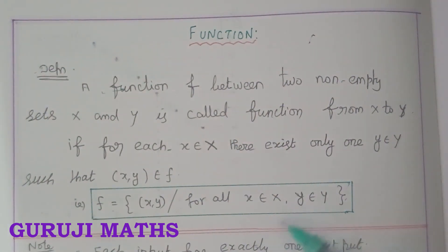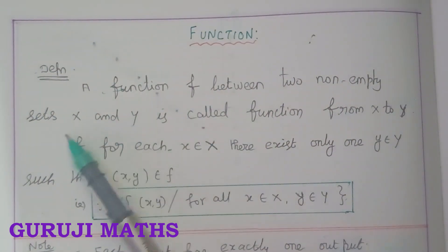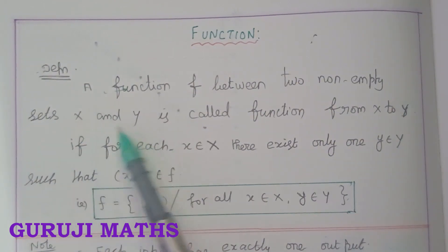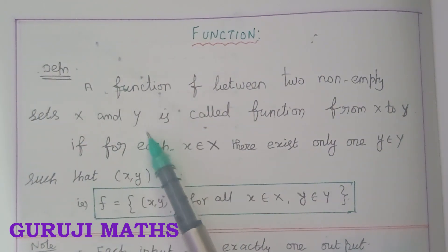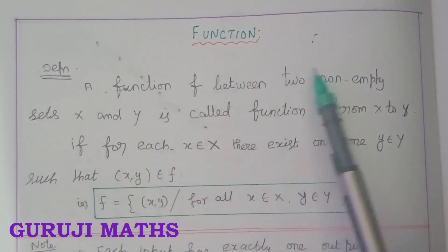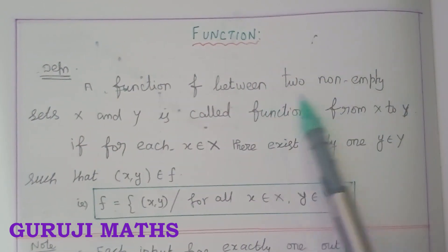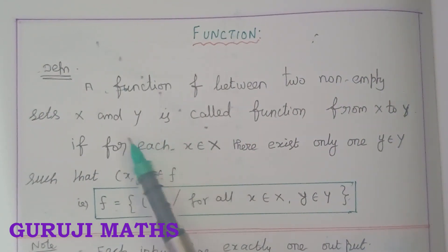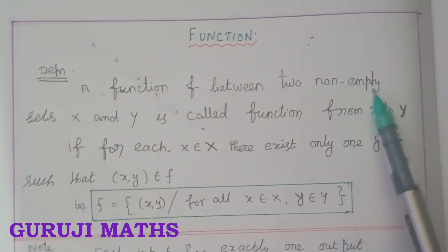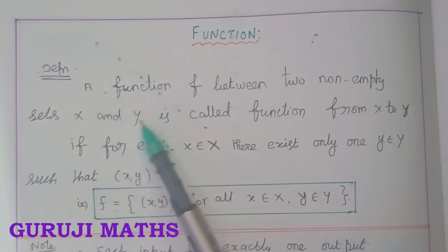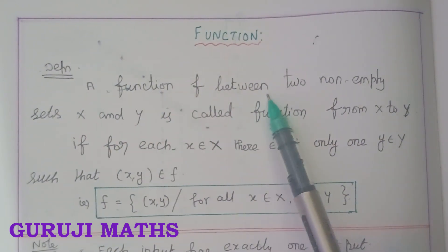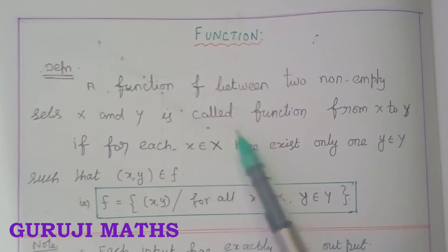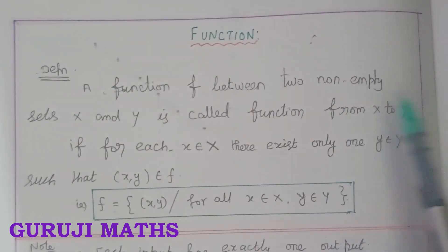The first definition is: the function f between two non-empty sets x and y. We will talk about the non-empty sets. The function f is between two non-empty sets x and y. It is called a function from x to y.